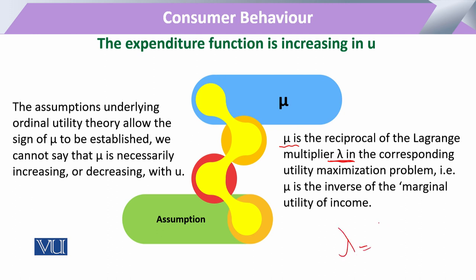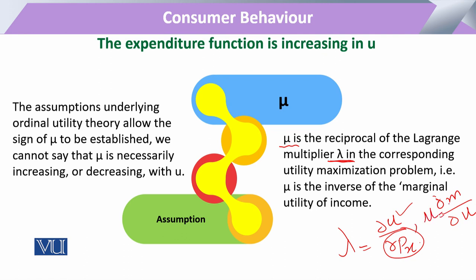If we ask what lambda is, we say: lambda is equal to the change in utility with respect to the change in price. This means how the utility of any commodity changes under a one-unit price. So if we take its inverse — its reciprocal — then the price moves to the top, and if we convert that price or give it other words as cost or expenditure, then we say: now it is the change in minimum expenditure with respect to utility.